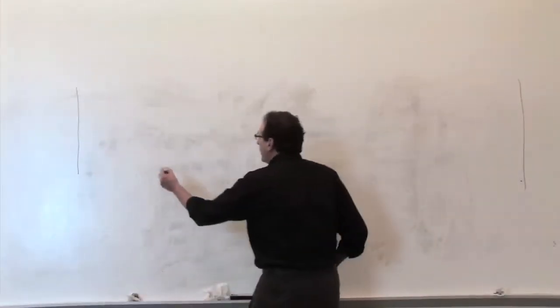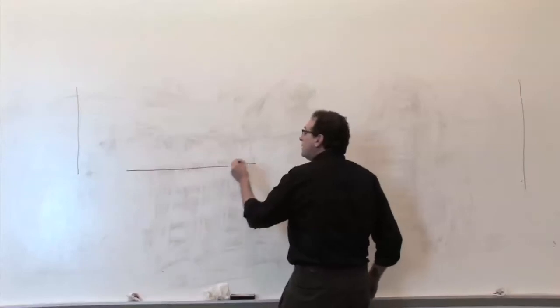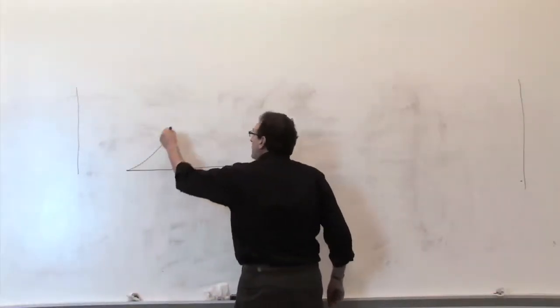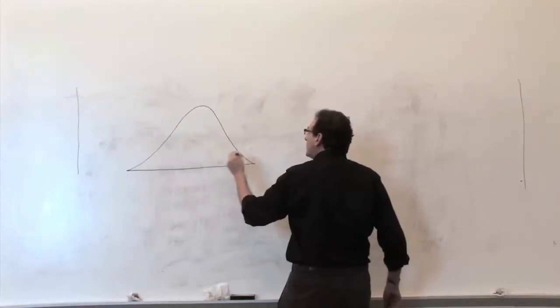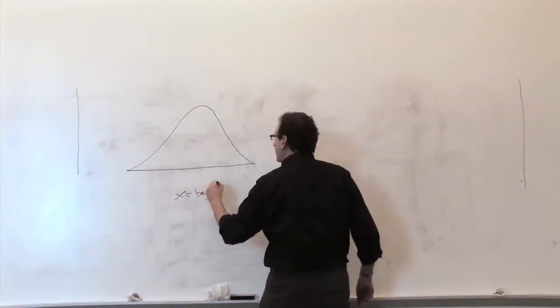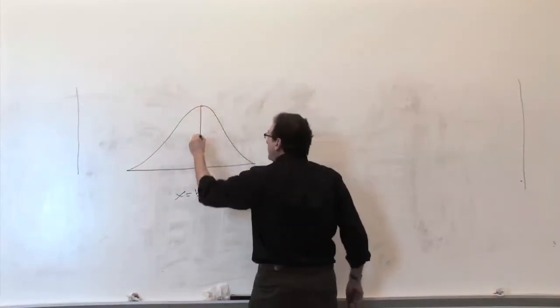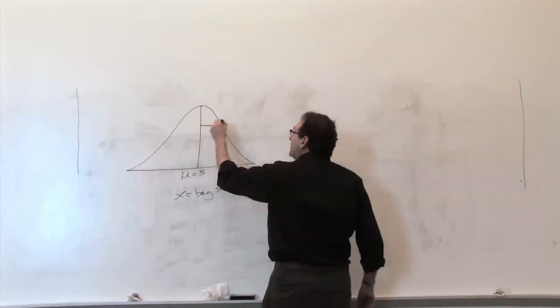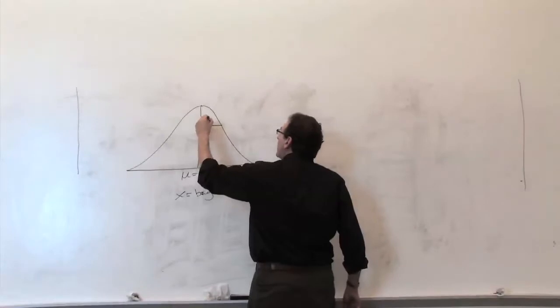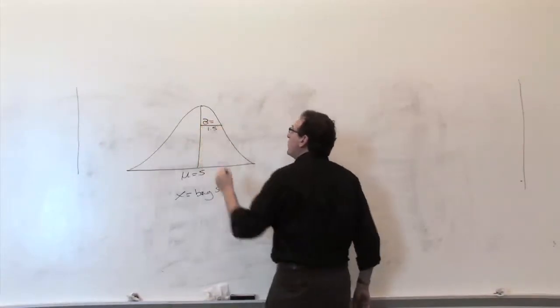We know that the bags, if you took all those millions of bags and put them into a histogram in very small, skinny categories, you would get X equals the bag strength. The average bag would be at about 5, actually 5. But not every single bag is exactly 5. There's going to be some variation.